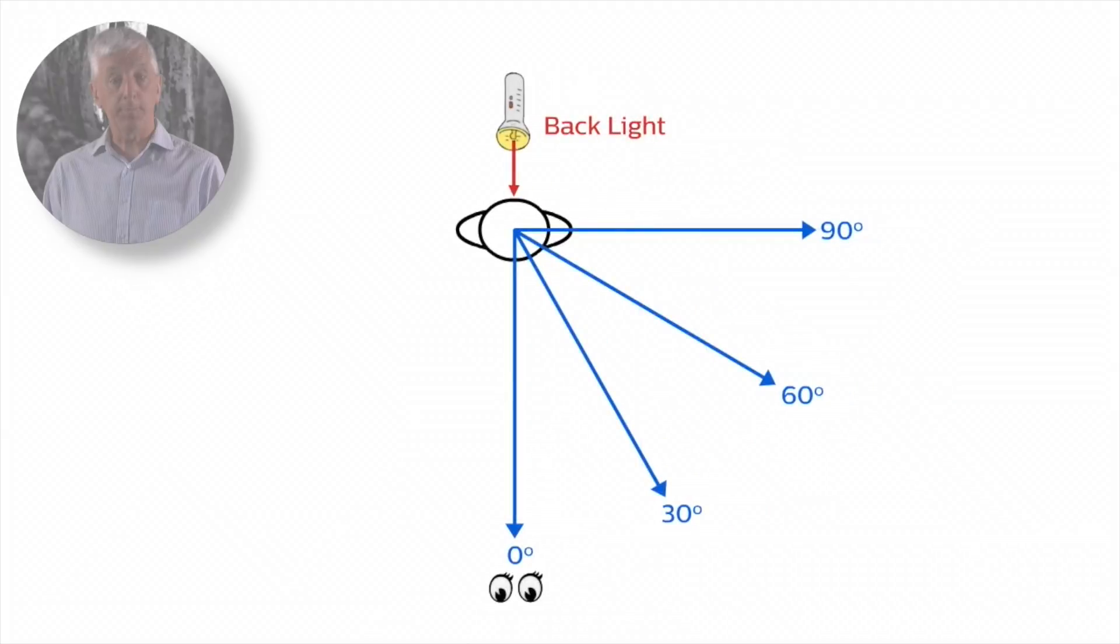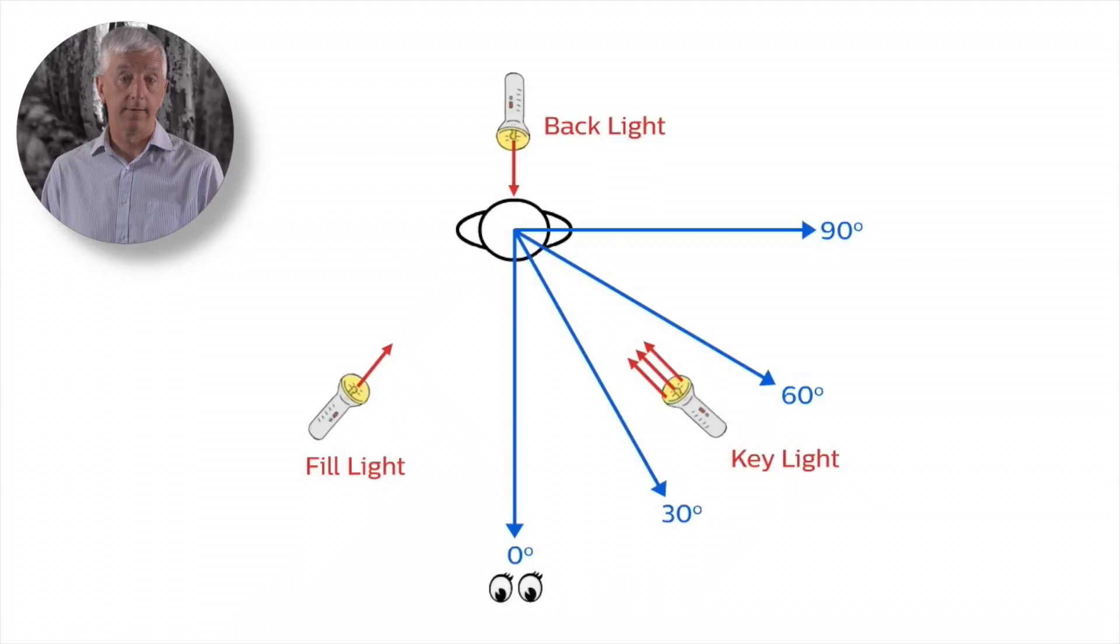We can combine all three spotlights to create the final effect. This technique is called three-point lighting and is frequently used in photography, television and film. Getting the balance right can be done by calculation, but often it is better to use the eye to make the final adjustment.